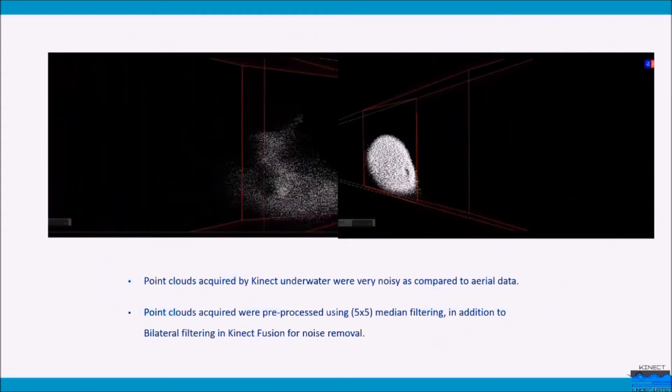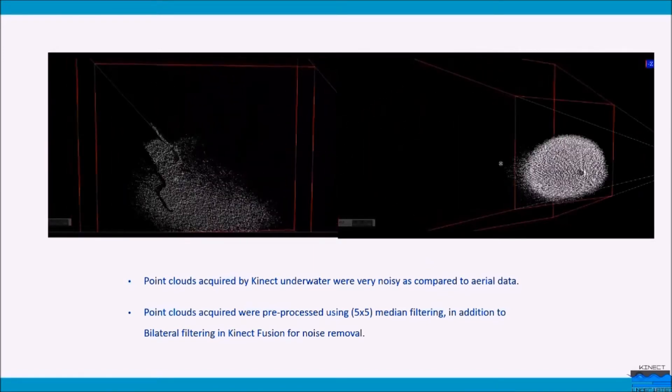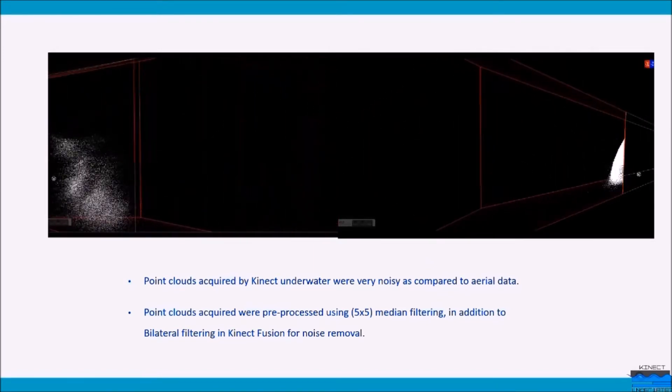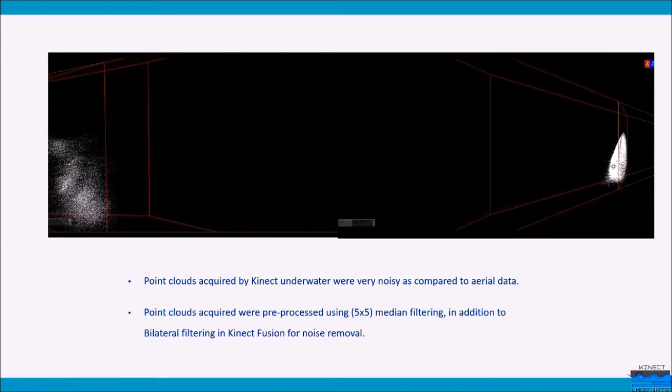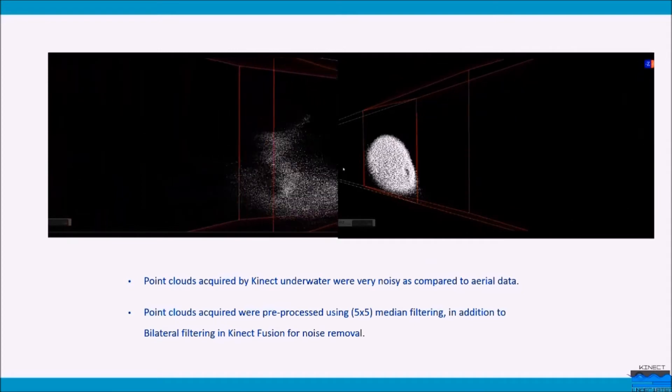The point cloud acquired is significantly noisy due to suspended particles and other microbial life that reflects the infrared in water. For depth images taken underwater, the noise can be categorized as a certain vapor type, so a 5x5 median filter was applied to the depth images in addition to the bilateral filters in Kinect Fusion.